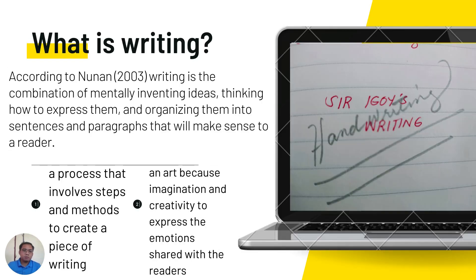Now let's proceed on the definition of writing. What is writing? According to Nunan, 2003, writing is the combination of mentally inventing ideas, thinking how to express them, and organizing them into sentences and paragraphs that will make sense to a reader. In writing, it's a process that involves steps and methods to create a piece of writing.